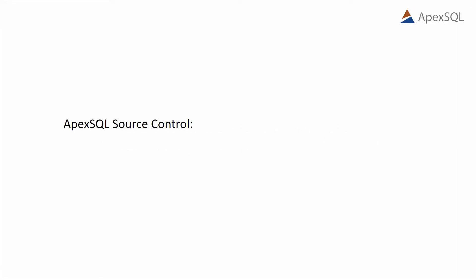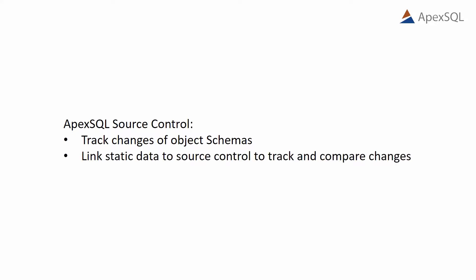The main focus of Apex SQL Source Control is to track changes of object schemas. But developers can also link static data to source control to track and compare changes as well.